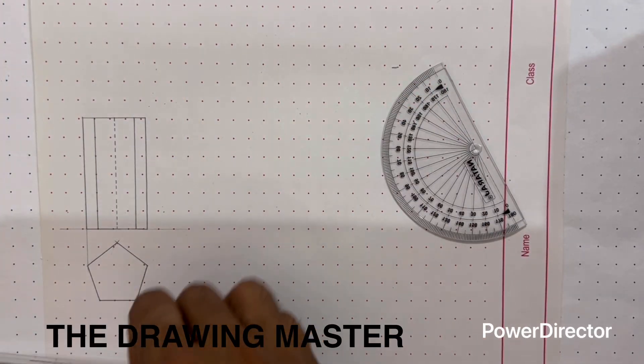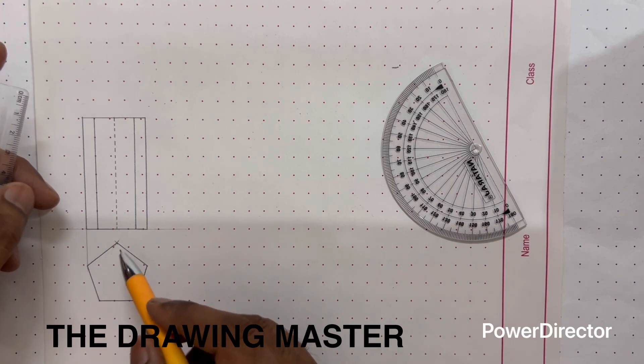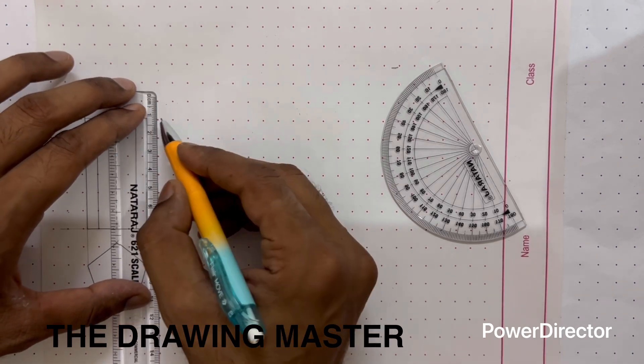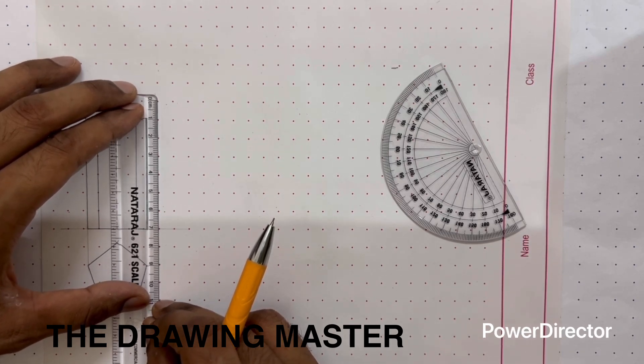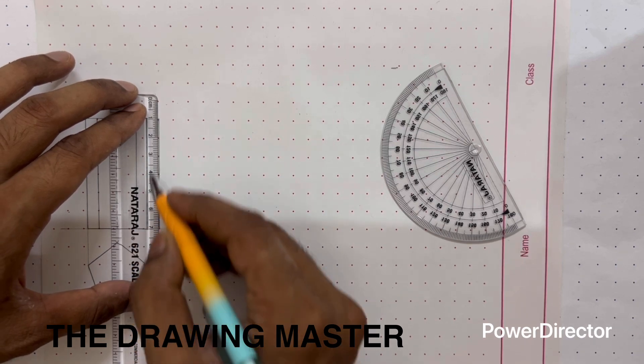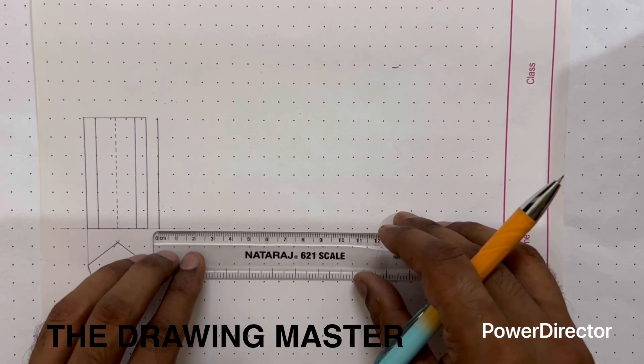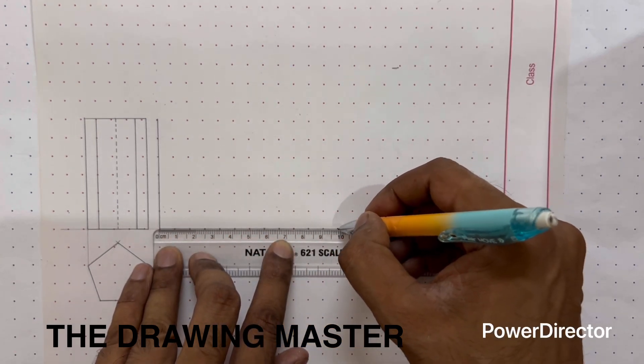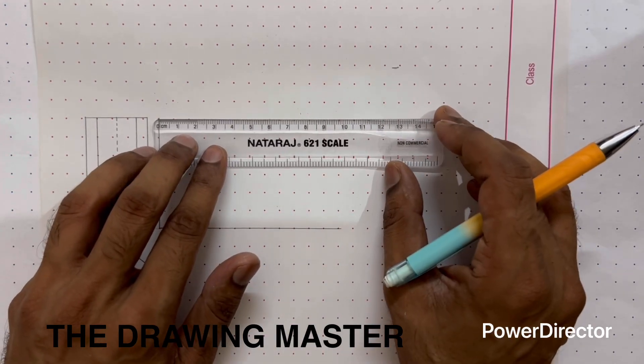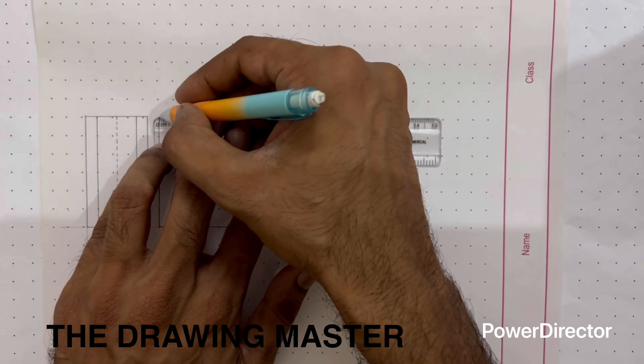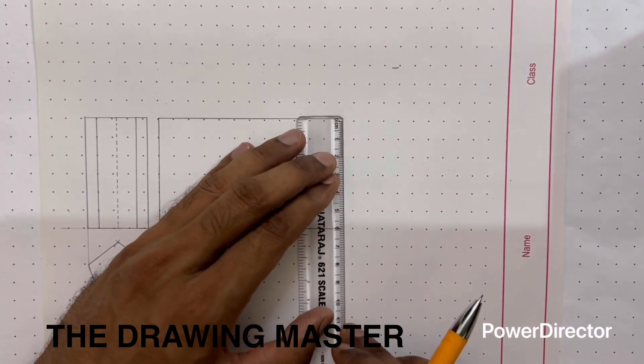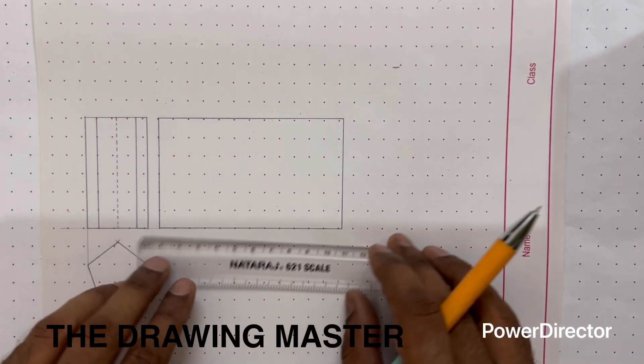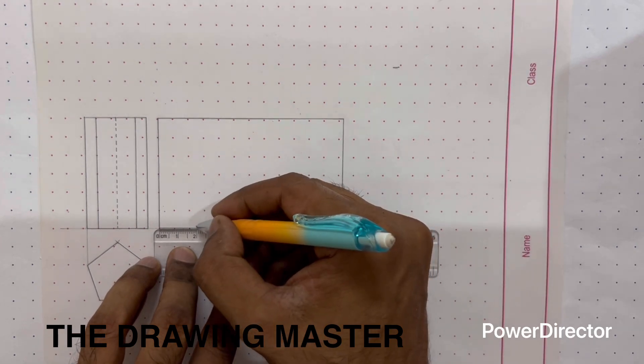This edge is the hidden edge. So now if you will unfold this, the length of the sheet will be equals to base edge into five. 20 into 5. Now this is the developed surface, we will divide this into 5 equal parts. 20 mm each.